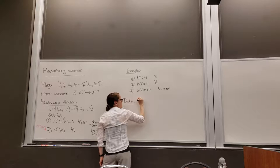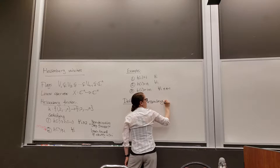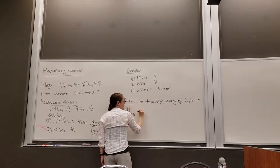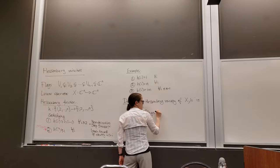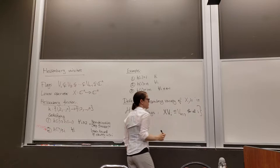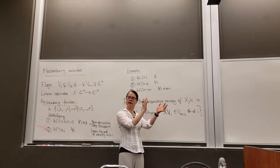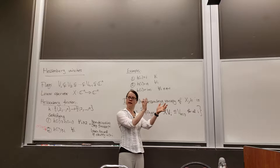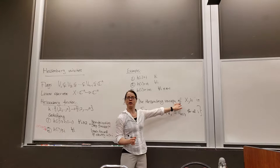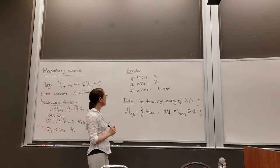Now let's give our Hessenberg variety. The Hessenberg variety of x and h is the set of flags such that x sends the i-th part of the flag into the h(i)-th part of the flag. So the i-th part of the flag can wiggle a little bit, but it is constrained by the Hessenberg function. There are two parameters, x and h, and we can vary them independently.